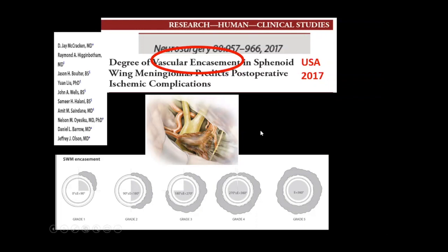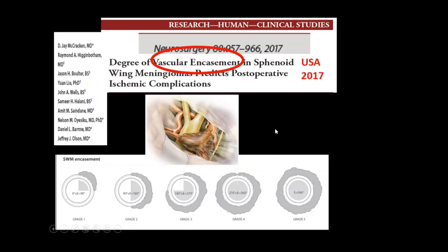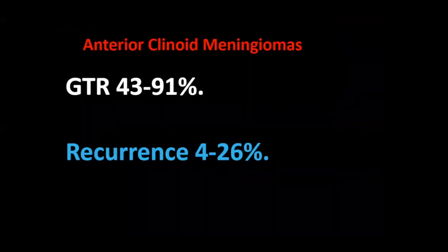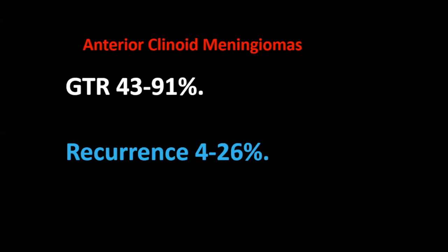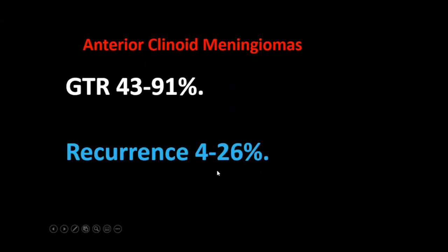When you do that, you have to remember the vascular relationship and the encasement — the Romoda triangle, described by Daniel Barron and his group in St. Petersburg. You can see the grades of involvement and encasement. If a case is totally encased with narrowing of vessels, you have to accept that you cannot remove all the tumor. Looking at the literature, gross total resection ranges from 43 to 91 percent. It can never be 100 percent — you cannot speak about Simpson Grade 1 resection in this area. Recurrence is therefore rather high: 4 to 26 percent.